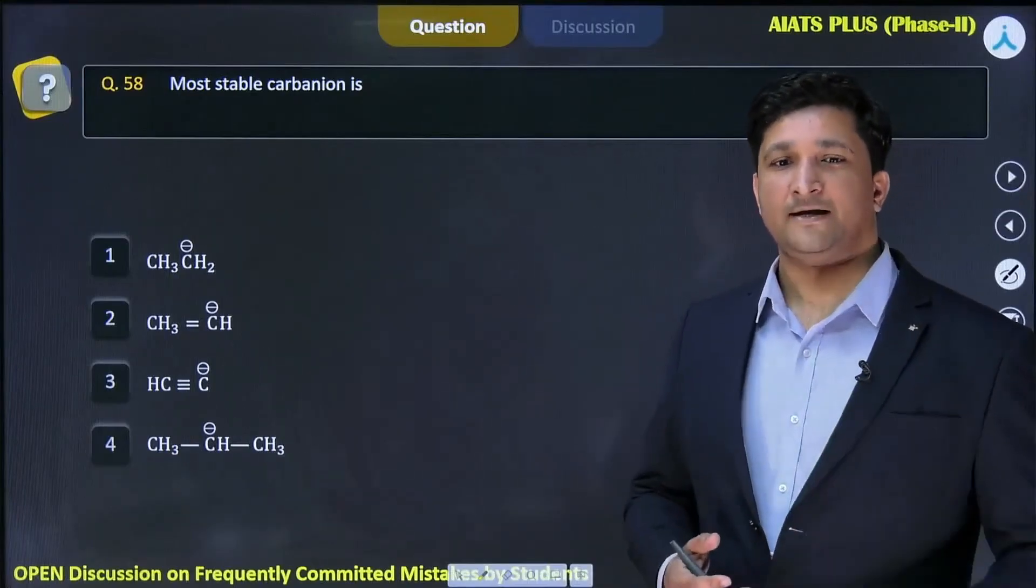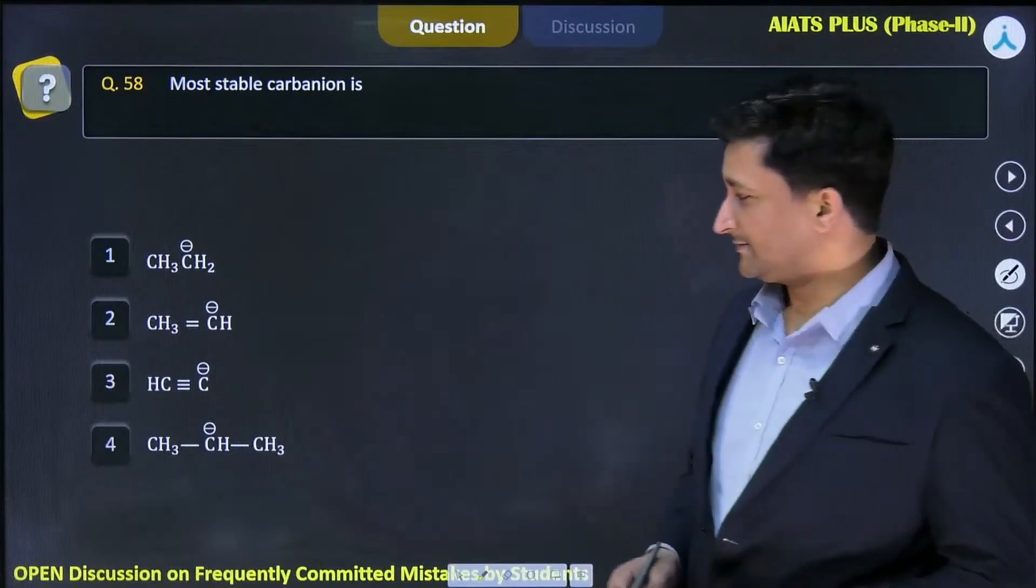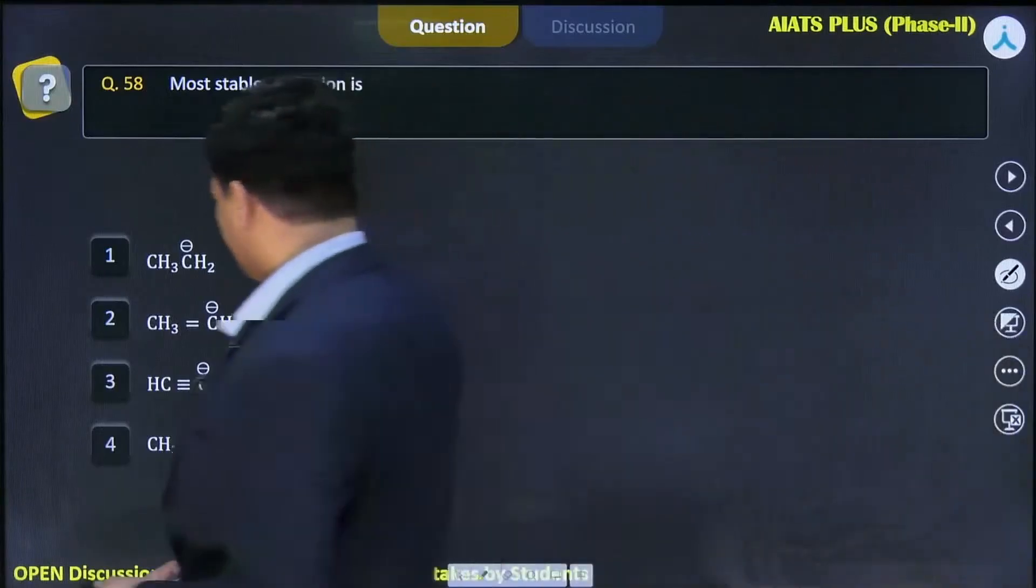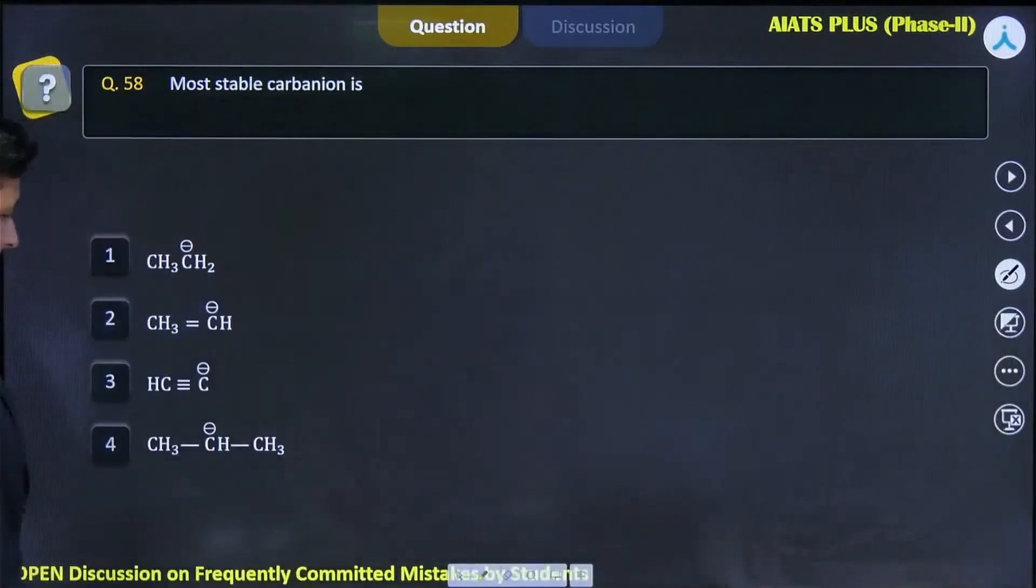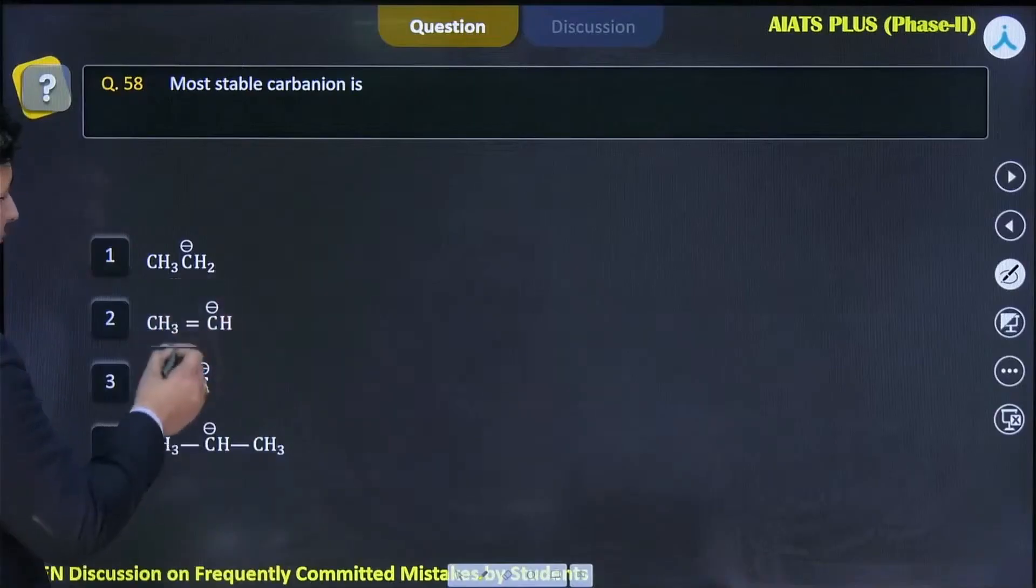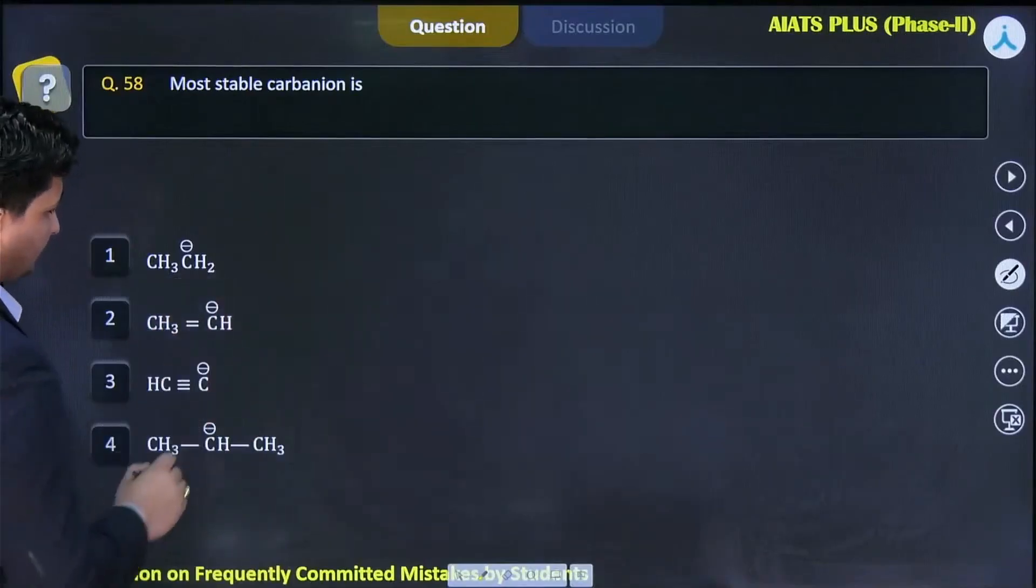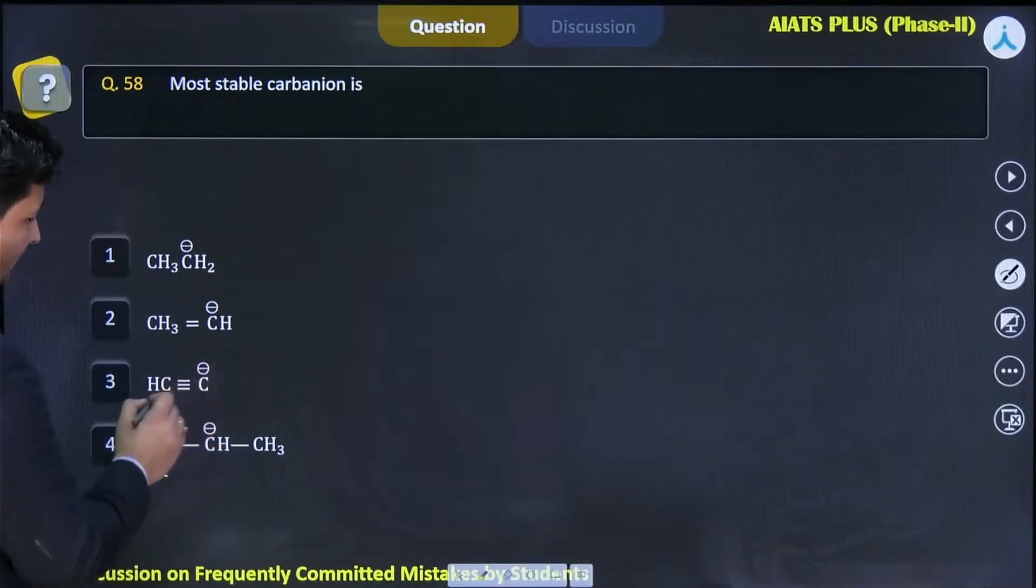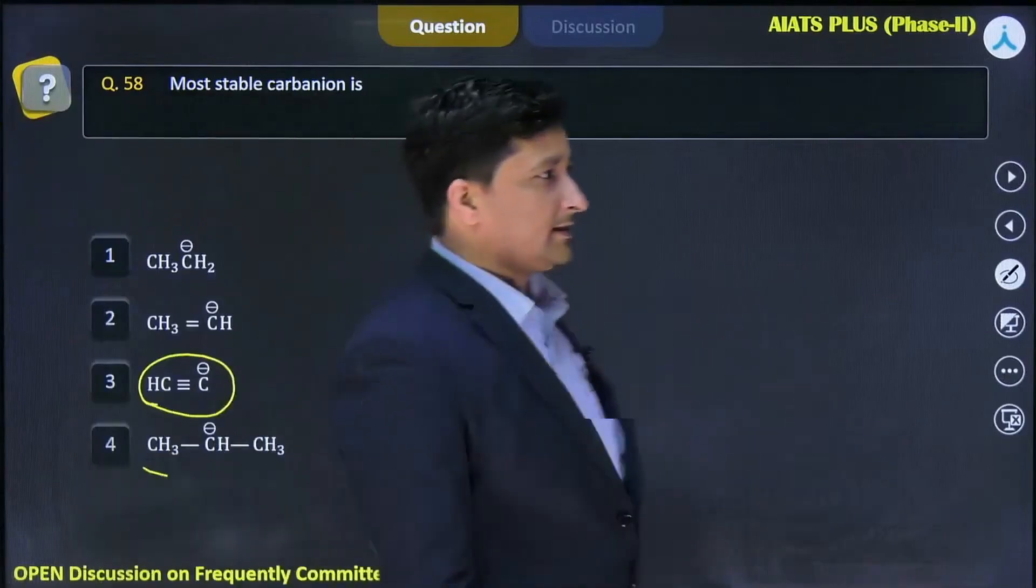Here you can see that CH3CH2 minus is there, CH3CH minus is there, HC≡C minus is there. Now again we have to think about this - here carbon is sp hybridized, this one is also sp hybridized.